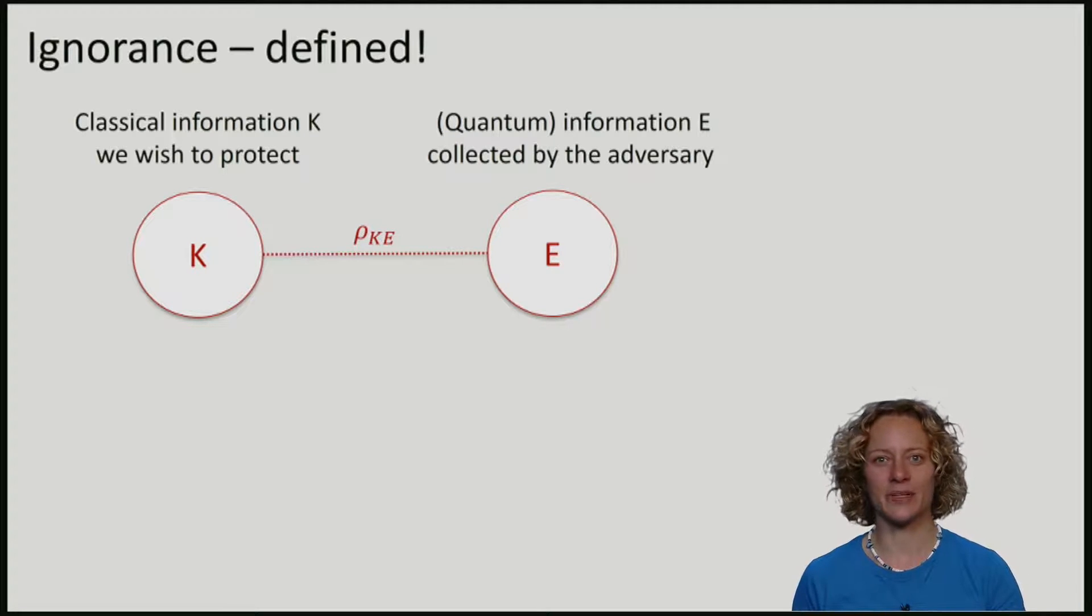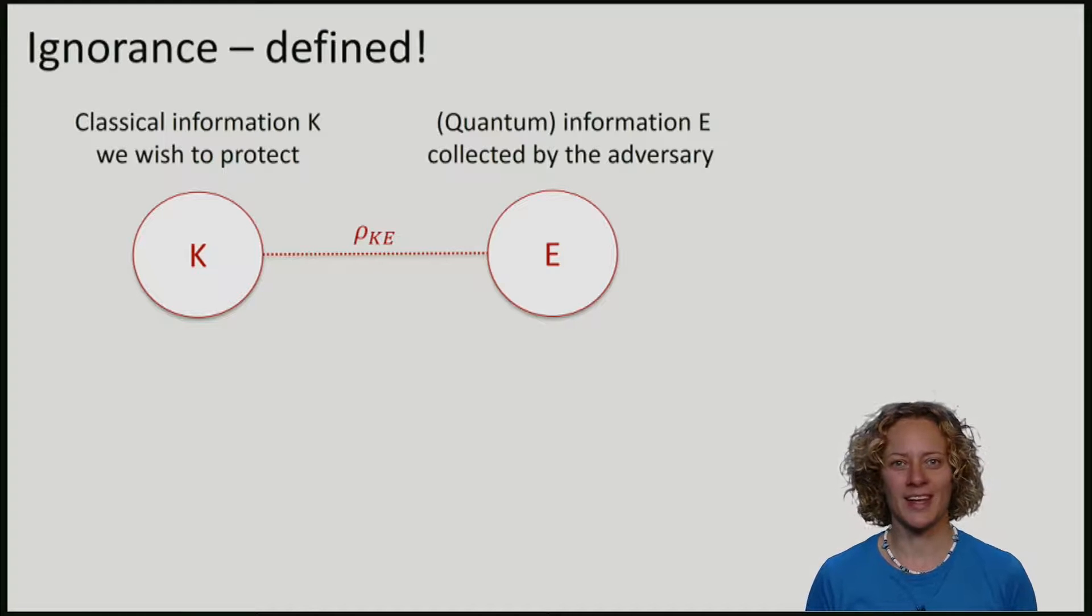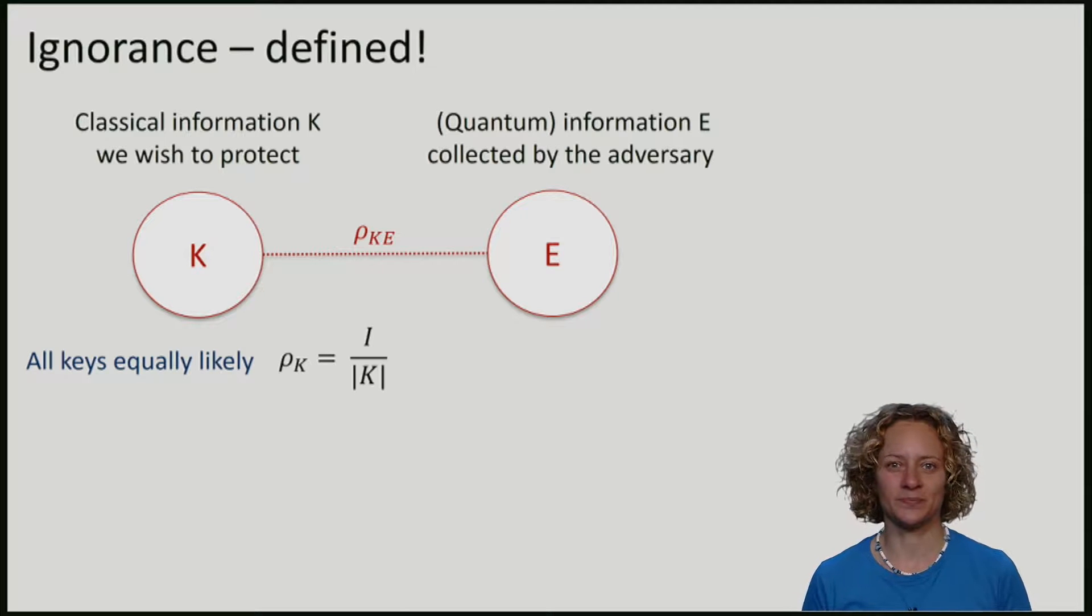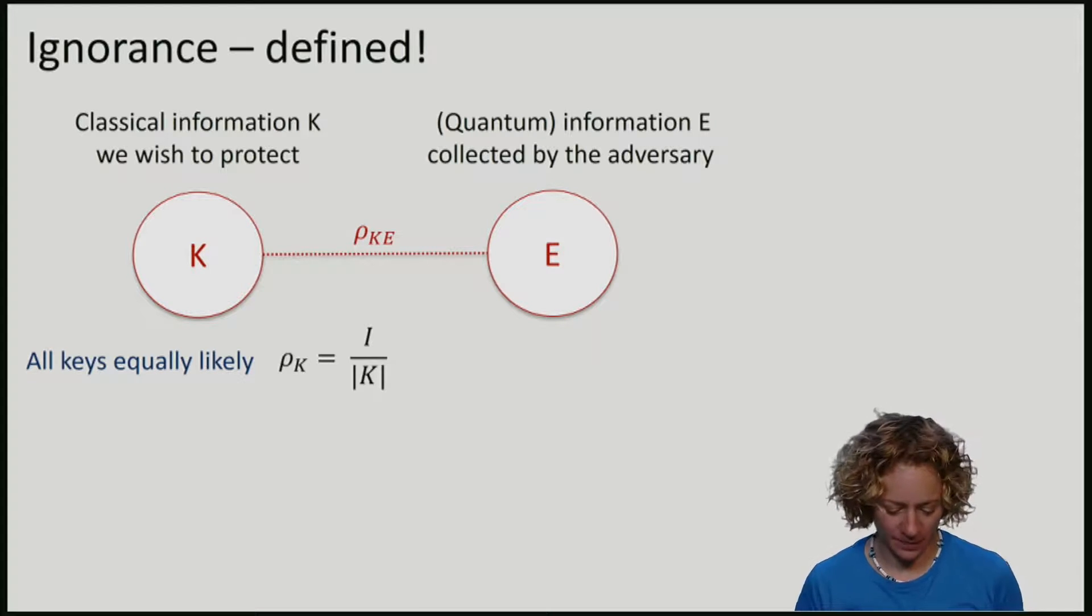We have already seen when discussing the one-time pad, that it would be great to ensure ignorance in the sense that all keys are equally likely. I am writing here the uniform distribution of classical keys as the maximally mixed state, where this here as a button indicates the number of possible keys.